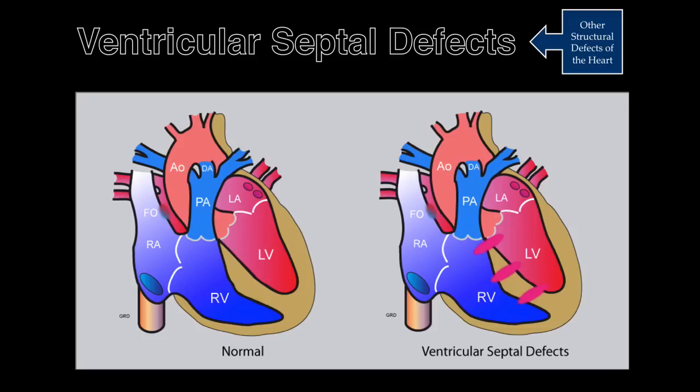Traditionally, ventricular septal defects have been reported to occur between 3 to 5 per 1,000 live births. With the increased use of color Doppler ultrasound, isolated muscular ventricular septal defects have been reported to be as high as 1 in 20 newborns.